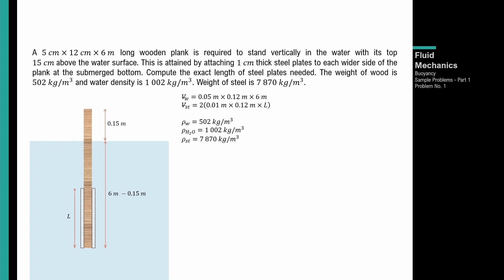Tapos yung volume naman ng steel — dalawang sides — so dalawang 1 cm or 0.01 meters by 0.12 meters, tapos yung required na length. Yung given na density: density ng wood is 502 kg/m³, density ng water is 1002 kg/m³, tapos yung density ng steel ay 7870 kg/m³.